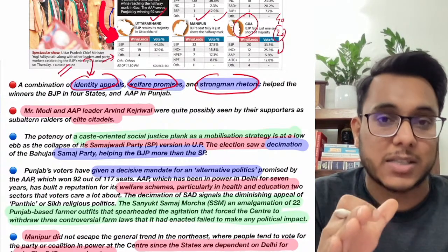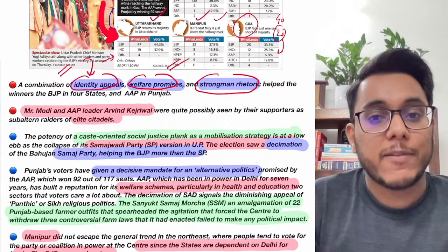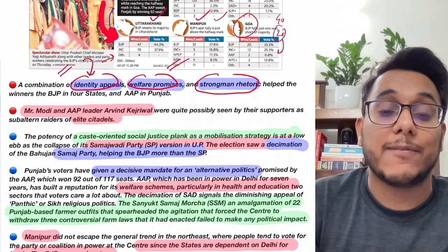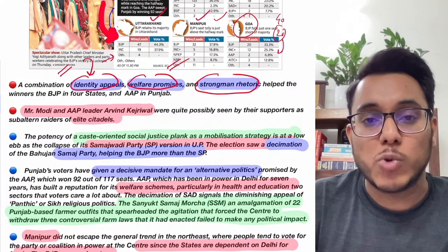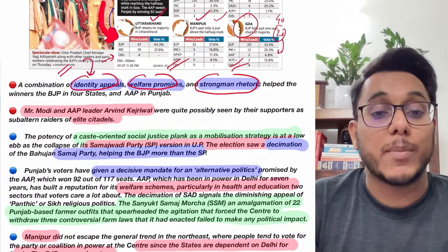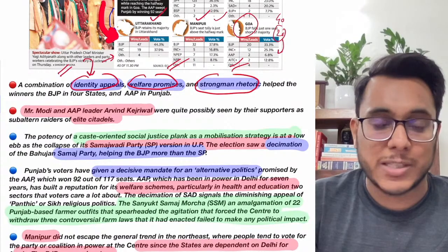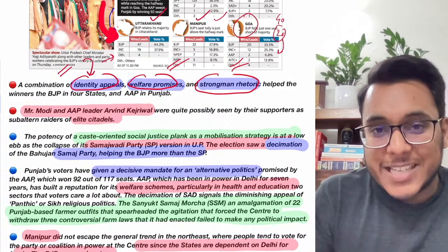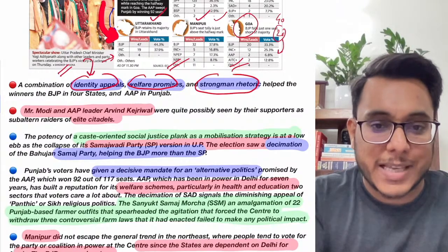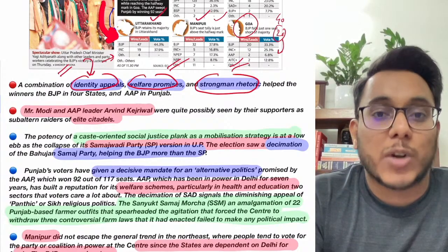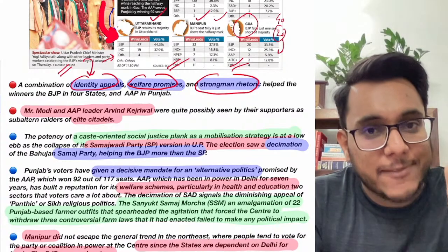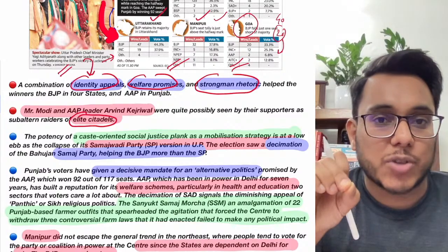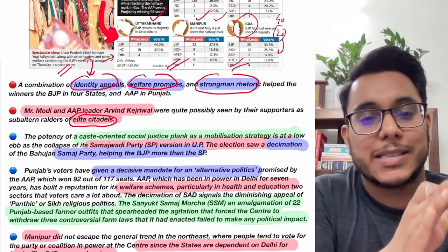BJP's victory is centered around the identities of Yogi Adityanath and Prime Minister Narendra Modi. In Punjab, the personality of Arvind Kejriwal played a very important role for AAP's win. Welfare promises have also taken center stage — AAP won Punjab because of welfare promises it fulfilled in Delhi, particularly in health and education. Strongman rhetoric is clearly visible in the personas of both Modi and Kejriwal.